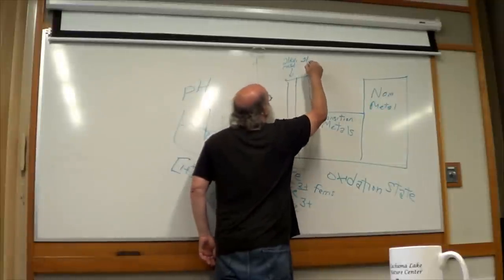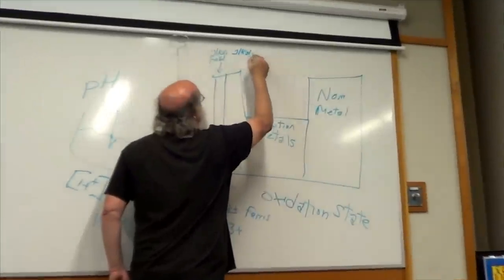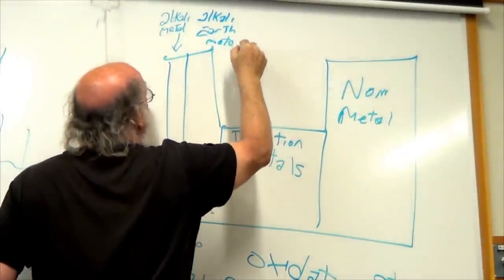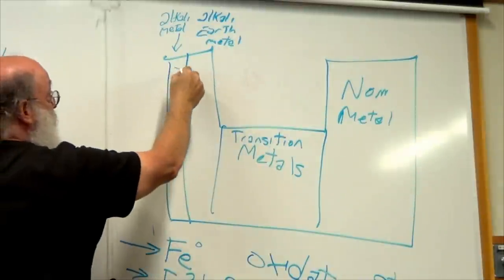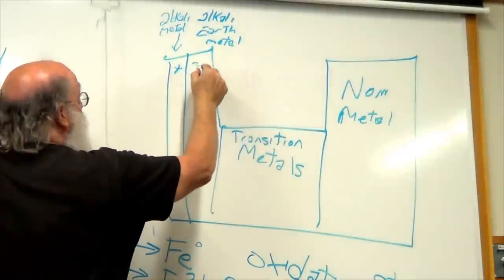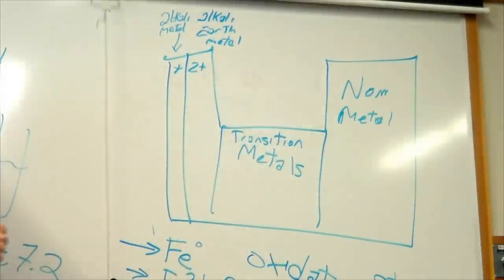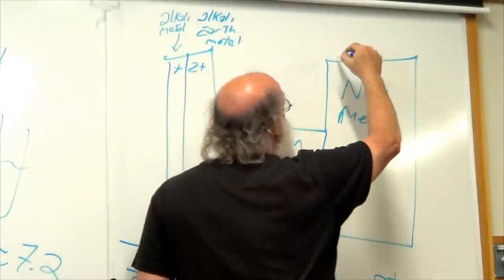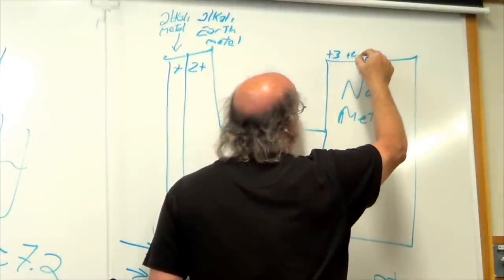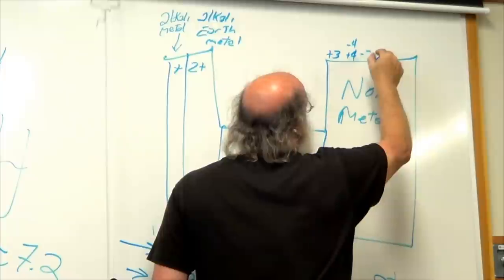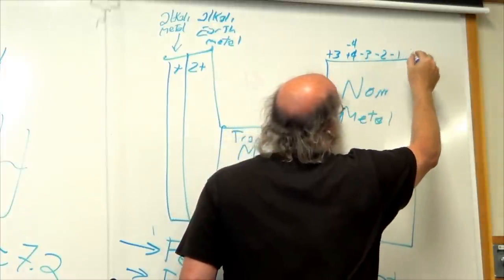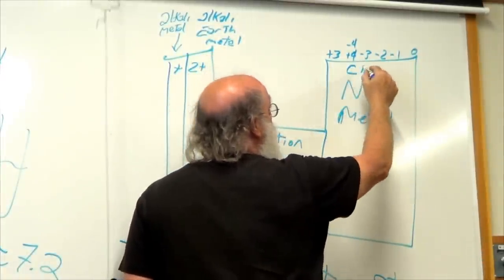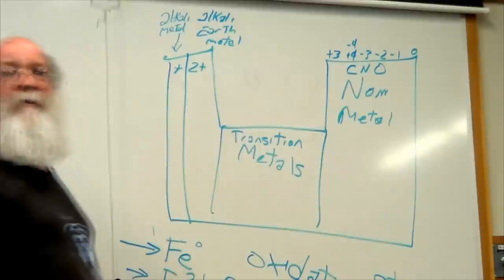Alkaline metals all have a plus one charge, while alkaline earth metals have a plus two charge. The non-metals also have charges. Some elements in this area include carbon, nitrogen, and oxygen.